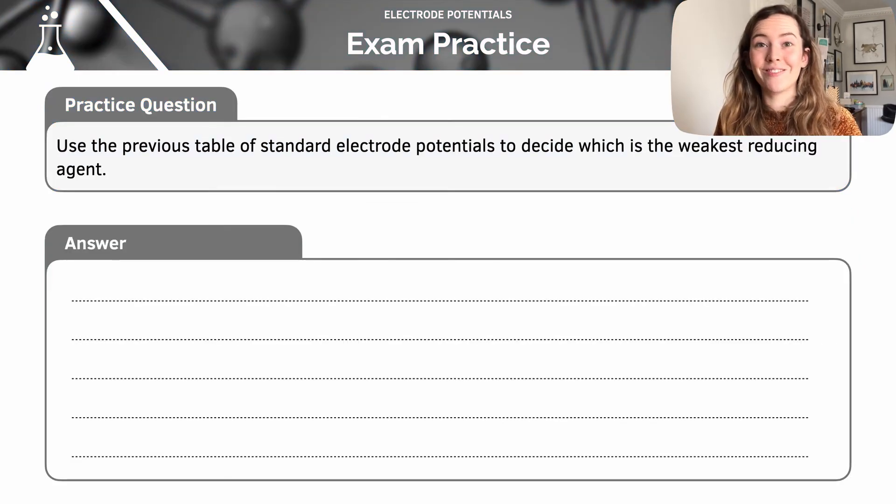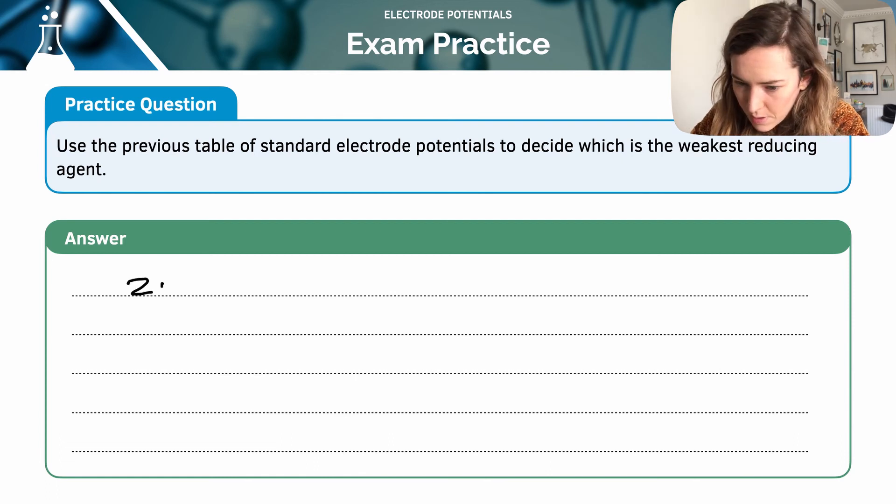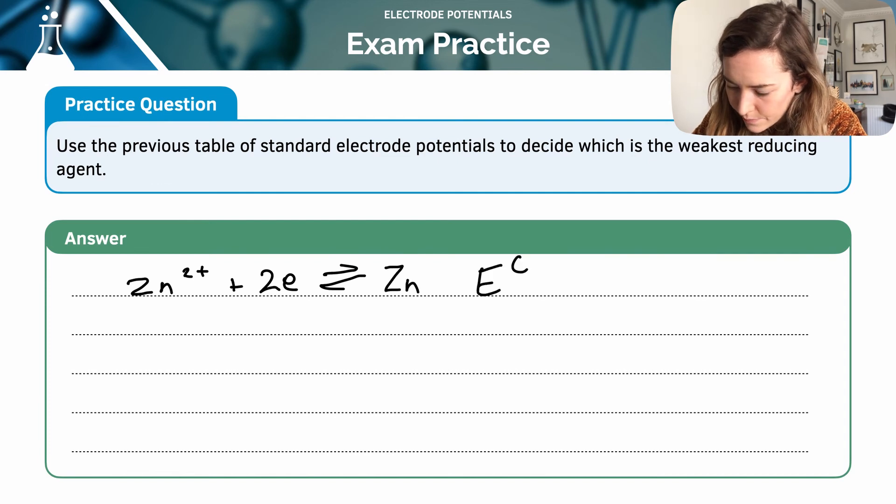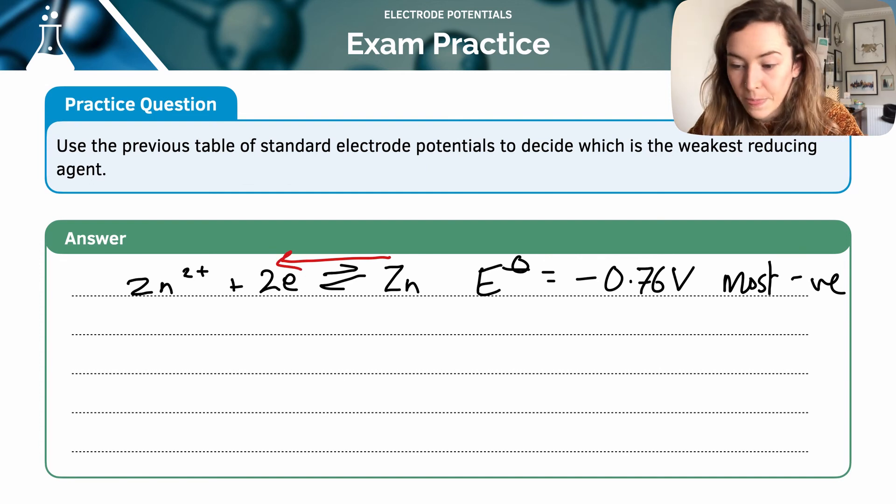Here's another practice question. Again, I'll go through a worked example, but pause the video if you want to give it a go first. When we're talking about identifying the strongest and weakest reducing and oxidizing agents, it can get a little bit mind-boggling when we're looking at these tables. We're having to reverse things in our heads. So let's take it step by step. First of all, I have identified that this equation here, minus 0.76, is the most negative electrode potential. So the reverse reaction is most likely to occur. So zinc is the strongest reducing agent.